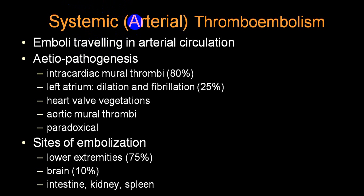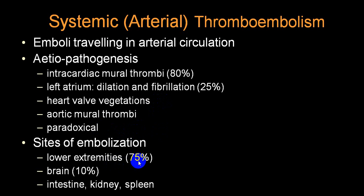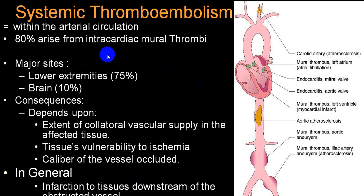Regarding systemic embolization by site: mural thrombus accounts for 80% of cases; left atrial thrombus accounts for about 25%. Heart valve vegetations produce infective embolization. Paradoxical embolization is very rare. Maximum embolization involves the lower extremity — major blood vessels like iliacs and popliteal — 75% of cases. About 10% are cerebrovascular strokes. Mesenteric artery, renal artery, and splenic artery involvement is uncommon.